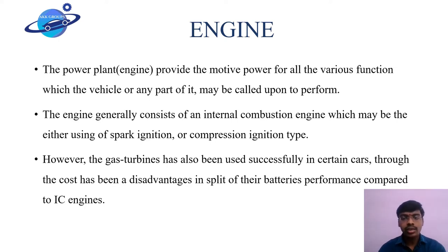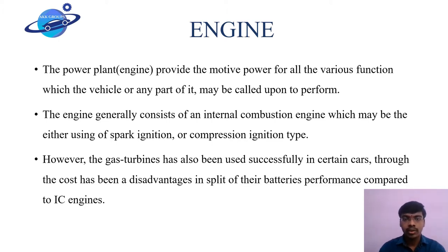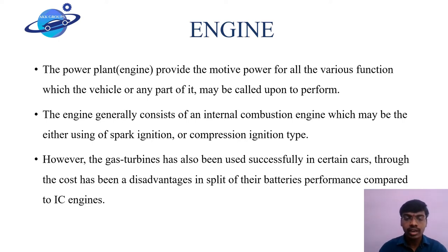In an internal combustion engine, which generally uses either spark ignition or compression ignition type — in spark ignition type we use a spark plug and the fuel used is petrol, whereas in compression ignition type the fuel is diesel, and instead of a spark plug we use fuel injectors. Spark ignition engines are also known as SI engines, whereas compression ignition systems are also known as CI engines.